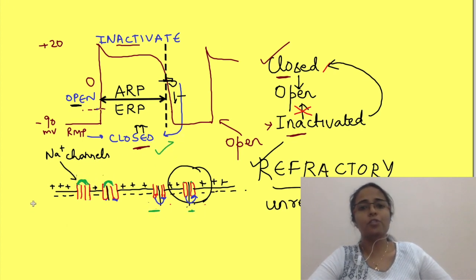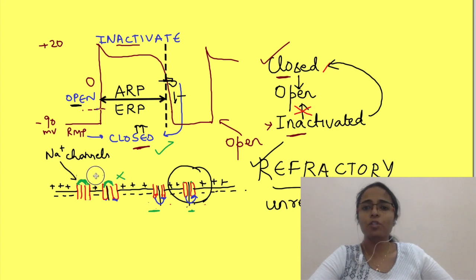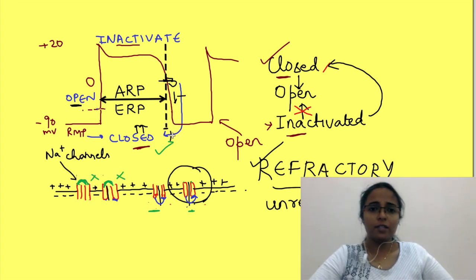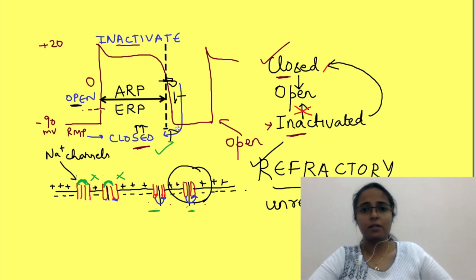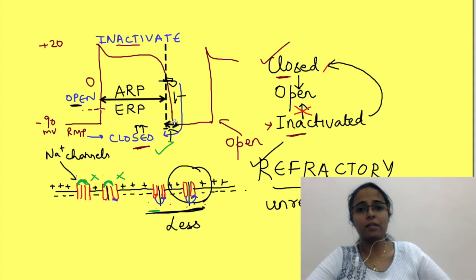As the potential changes towards RMP, more and more channels close and less and less are inactivated. So, after this point, if a stimulus comes, it may stimulate the cell, but a higher strength of stimulus is required. Because number of channels available to open are less.